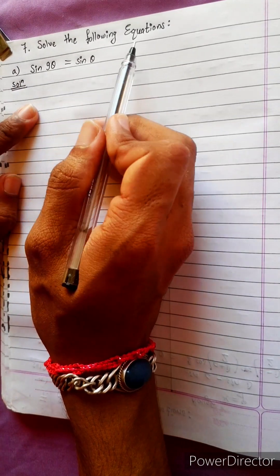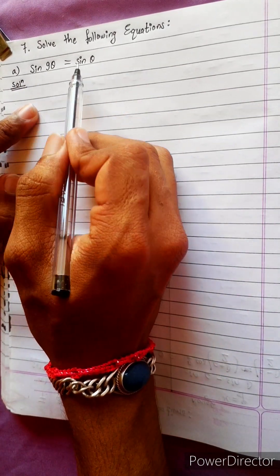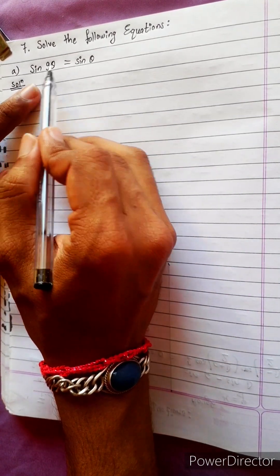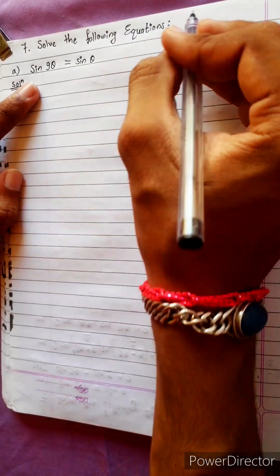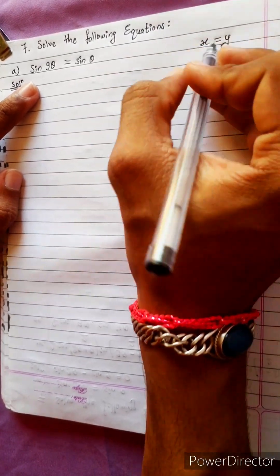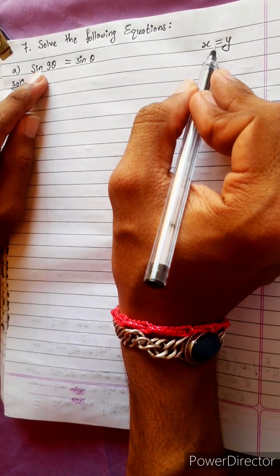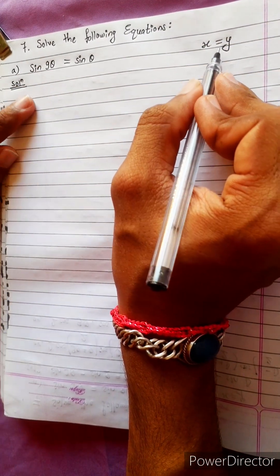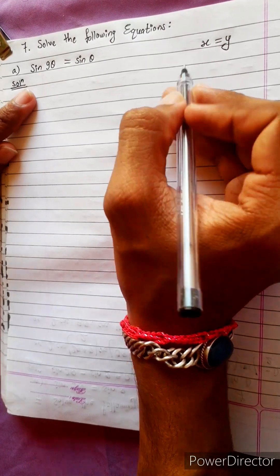This is the following equation: sin 9θ equals sin θ. How do we solve it?